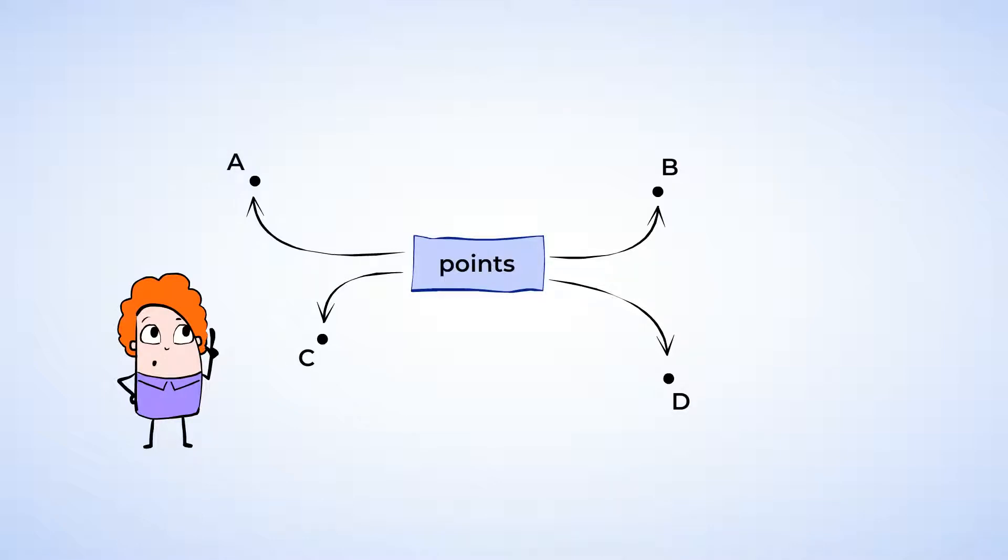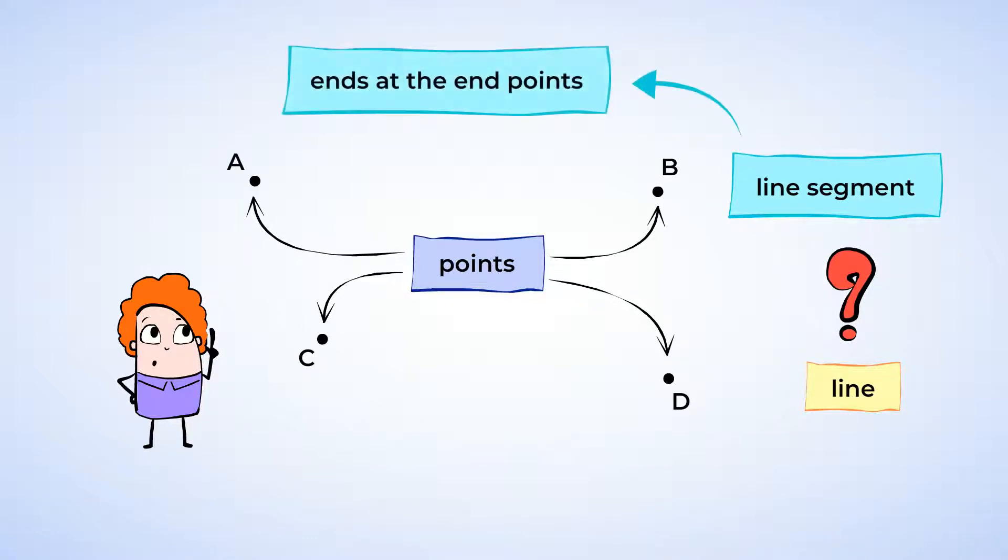These are four different points. When you have two points, you can connect them with a line segment. Now what's the difference between a line and a line segment? Well a line segment ends at the points. If we connect point A and point B with a line segment, it has a clear start and end.